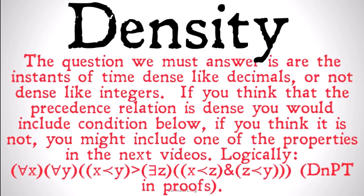The question we must answer is: are the instants of time dense, like decimals are, or not dense, like integers are? If you think the precedence relation is dense — that there's always going to be another instant between any two instants — you would include the condition below. Logically, for all x and all y, if x precedes y, that implies there exists some z such that x is before z and z is before y. We'll represent that as DNPT in proofs.